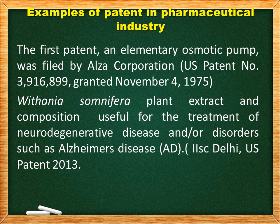Some examples of patents in the pharmaceutical industry: the first patent on an elementary osmotic pump was filed by Alza Corporation, granted by the US Patent Office in 1975. Another example is Withania somnifera plant extract and composition useful for treatment of neurodegenerative diseases and Alzheimer's disease, with a patent granted in 2013. Patent information can be found on Google Patents, a digital library containing around 87 million patents from 17 patent offices including the USPTO, European Patent Office, China's CNIPA, Japan Patent Office, Korean Intellectual Property Office, and WIPO.